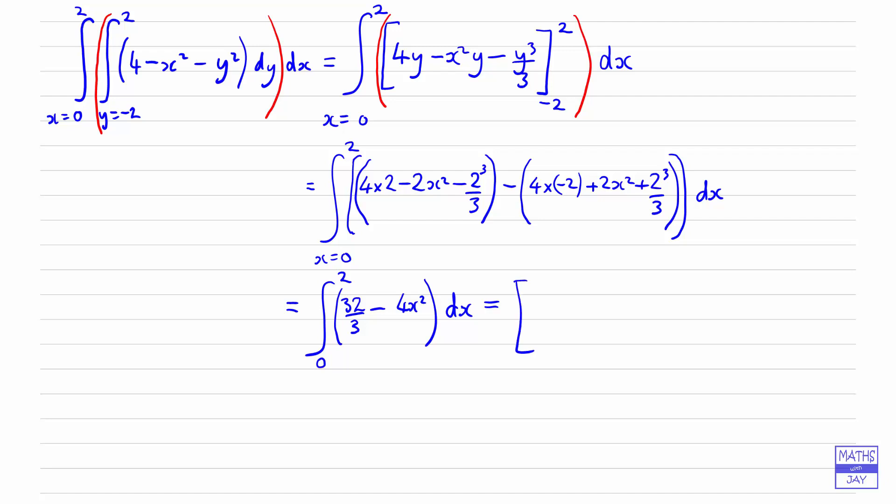So now we've got a very straightforward integral to do here. We've got 32 over 3, multiplying our x. And then integrating x squared, we'll get 4 times x cubed over 3. And that will be between 0 and 2.